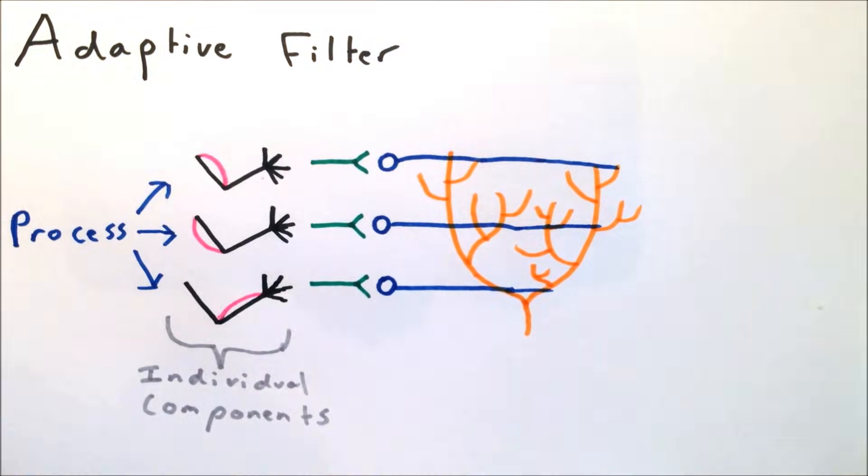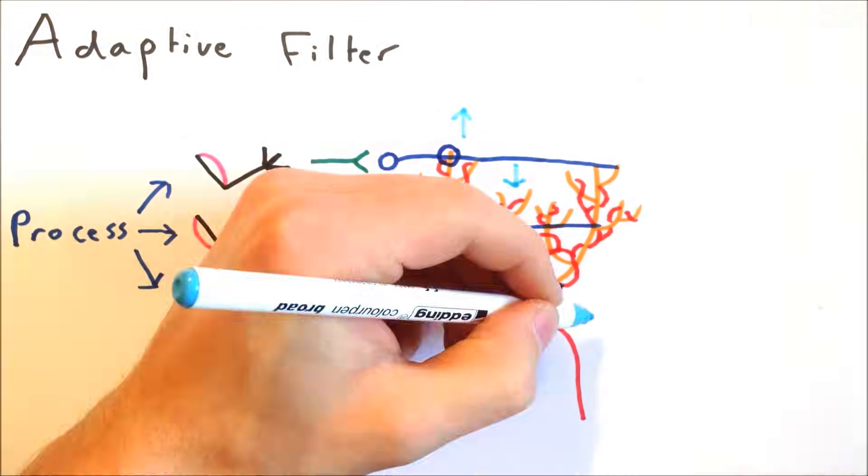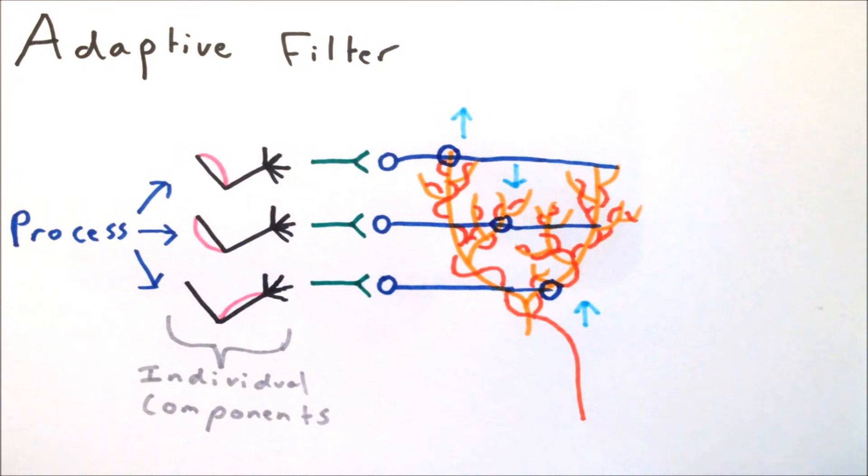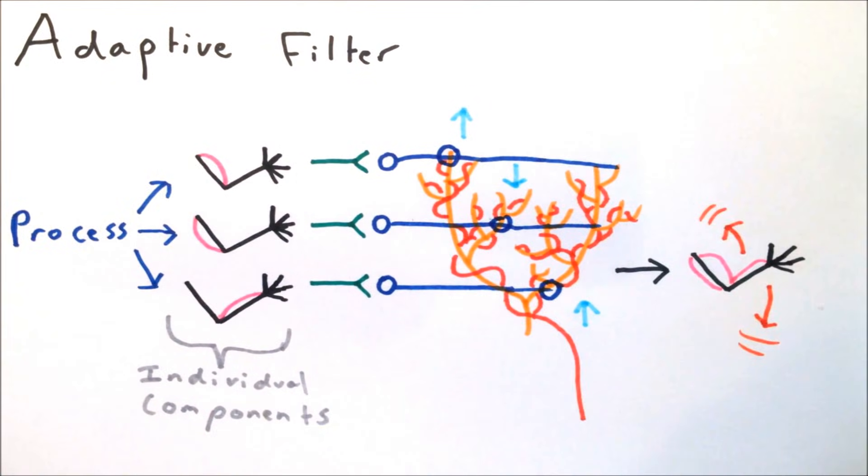Then, as long as the climbing fiber input can represent a suitable error signal, the strength of each of these connections to the Purkinje cell can be individually modulated by LTD. The relative strengths of each component can then be altered, until the process can be performed smoothly without error.